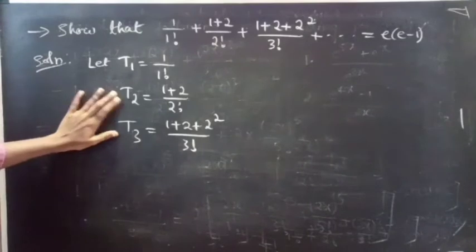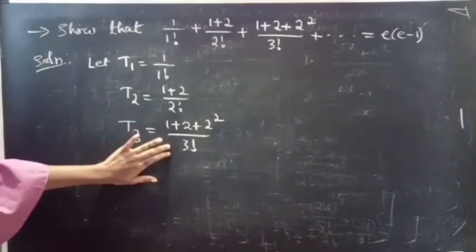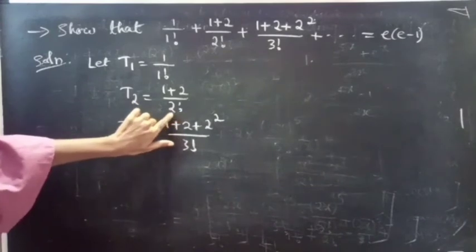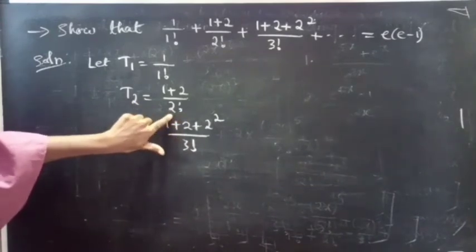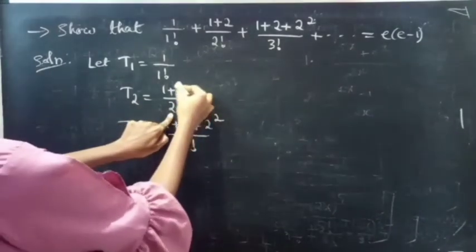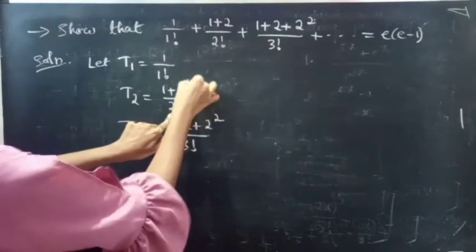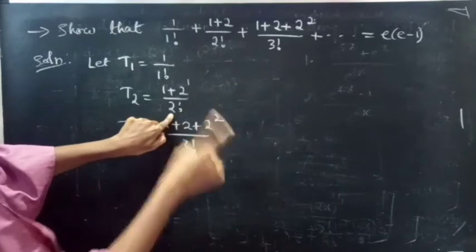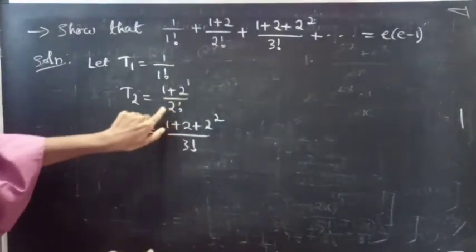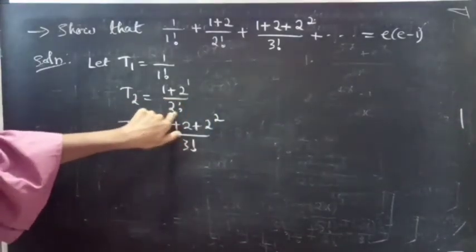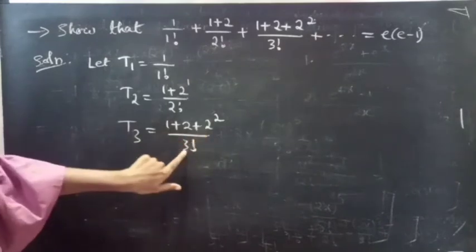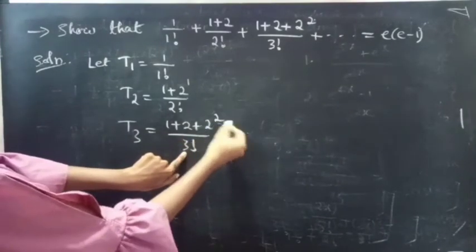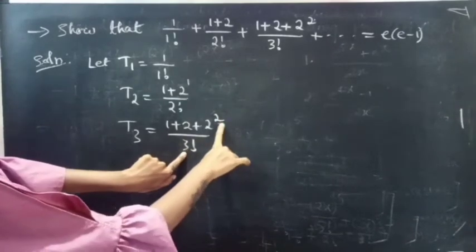If you notice in the second term and third term, in the denominator you are having 2 factorial. If you are having 2 in the denominator, the power of 2 will be 1. The last term — the power of the last term will be less than the number in the denominator. You are having 3 factorial, and the power of the last term is 2, which is exactly 3 minus 1.